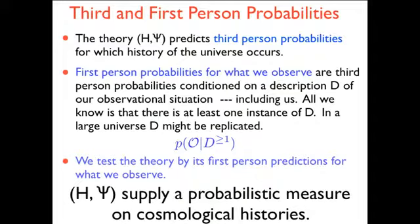Now, a theory, the combination of a theory like a Hamiltonian and a state, predicts what we call third-person probabilities, probabilities for which of a set of alternative histories occurs in the universe.